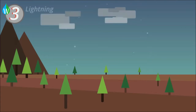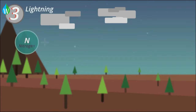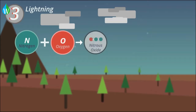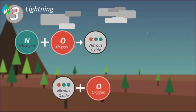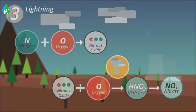Thirdly, lightning can cause chemical reactions in the atmosphere, resulting in nitrogen reacting with oxygen to produce nitrous oxide. The nitrous oxide then reacts with more oxygen and dissolves in rainwater to make nitrous acid. This rainwater containing nitrous acid increases the amount of nitrate in the soil.